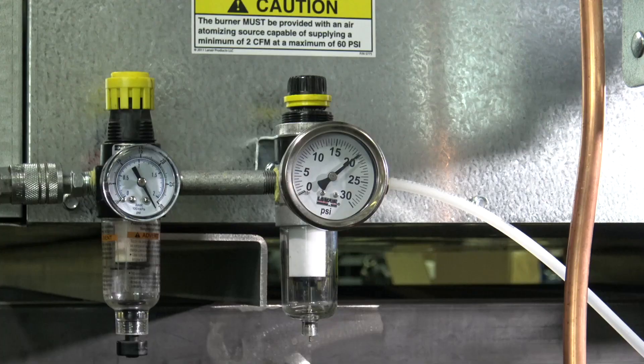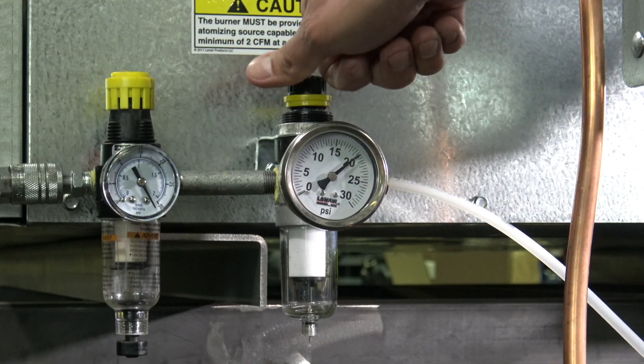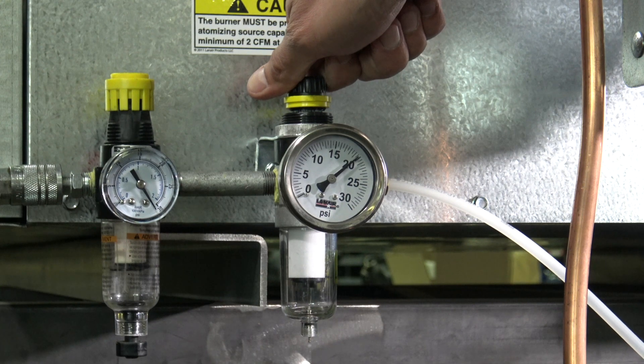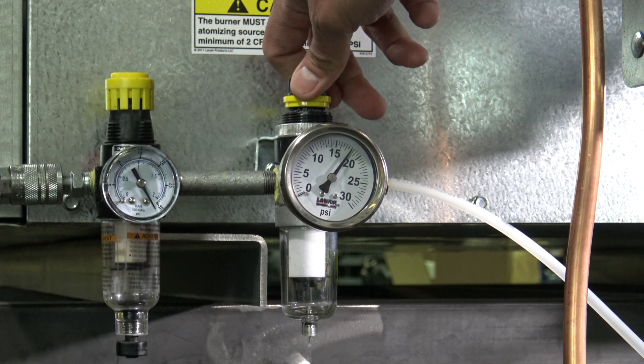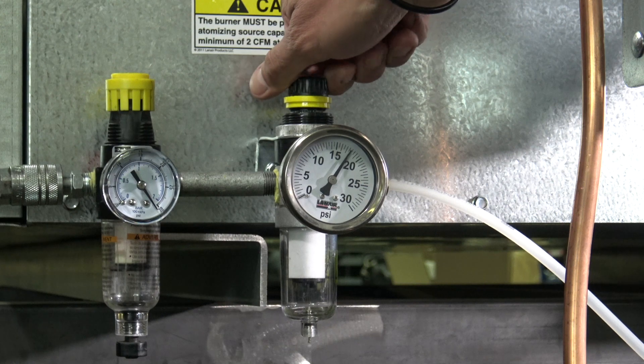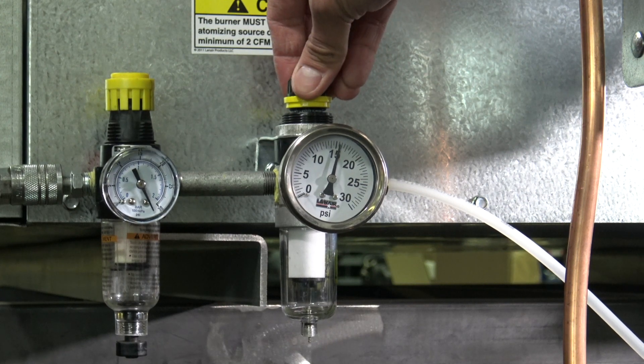For a unit that is under-firing, we will reverse our approach. Begin by reducing the atomizing air pressure at the secondary air pressure regulator in 1 psi increments until the flame is correct, or down to 1 psi below the recommended air pressure setting range for the model, whichever comes first.